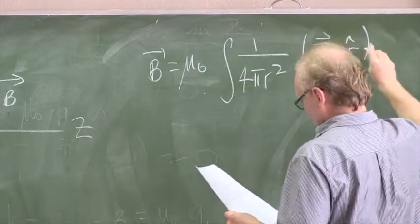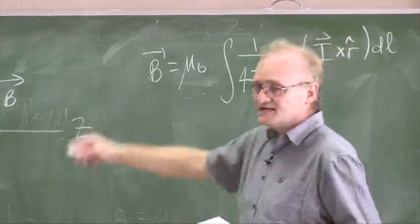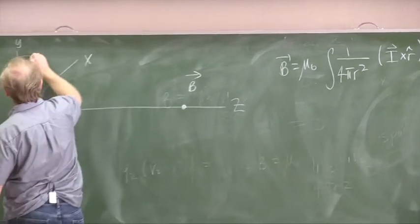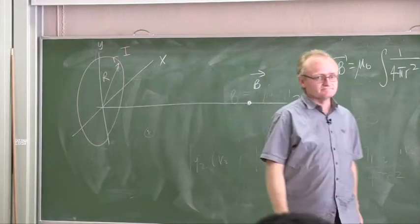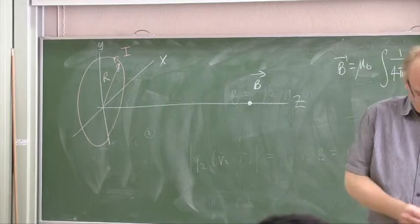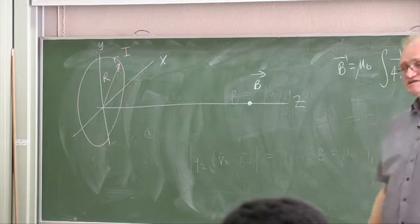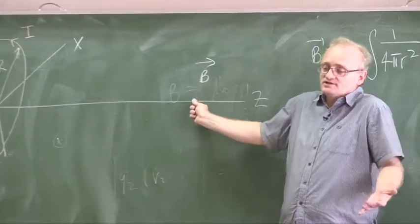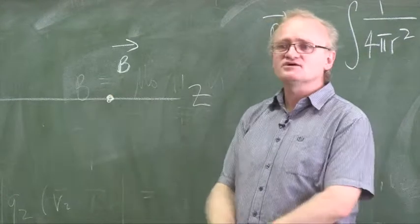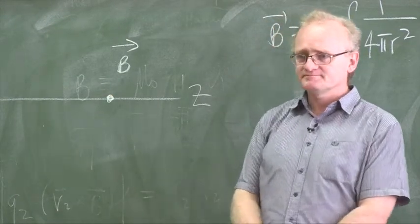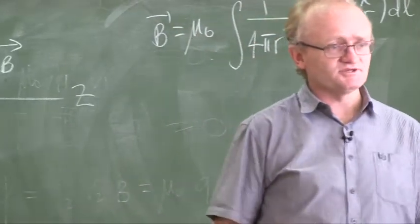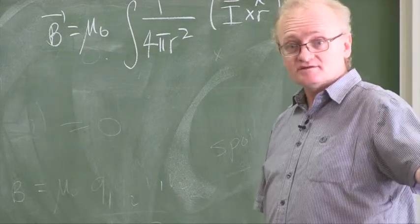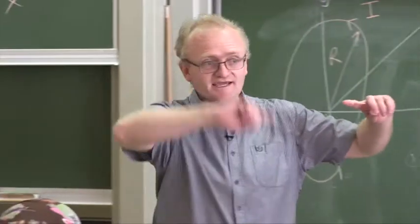We're going to apply Biot-Savart and calculate the quantity I cross r-hat dl. Inside this loop there is a current I flowing. Before we start calculating, we said last time we should never start calculating unless we know what the answer is — otherwise how do you know if you're right?